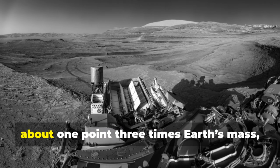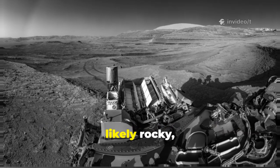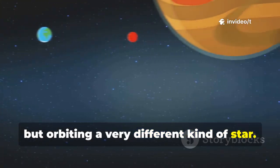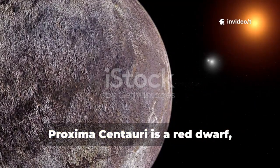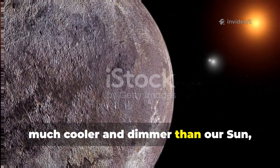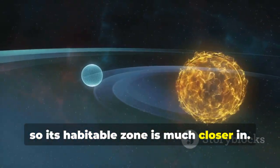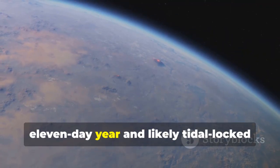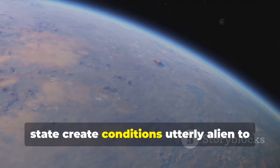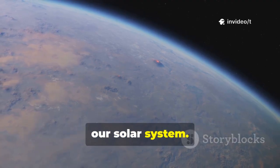Proxima b is a super-Earth, about 1.3 times Earth's mass, likely rocky but orbiting a very different kind of star. Proxima Centauri is a red dwarf, much cooler and dimmer than our sun, so its habitable zone is much closer in. The planet's short 11-day year and likely tidal-locked state create conditions utterly alien to our solar system.